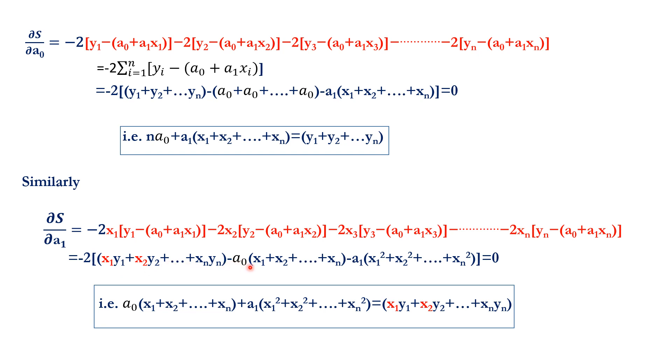Minus 2[x₁y₁ + x₂y₂ + et cetera] minus a₀(x₁ + x₂ + ... + xₙ) minus a₁(x₁² + x₂² + x₃² + ... + xₙ²). So, after removing this minus 2 and taking this term into the other side of the equation, this can be written as a₀(x₁ + x₂ + ... + xₙ) plus a₁(x₁² + x₂² + ... + xₙ²) equal to x₁y₁ + x₂y₂ + ... + xₙyₙ.